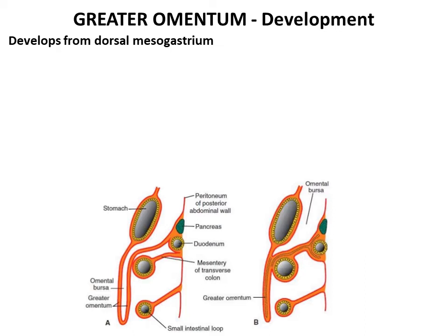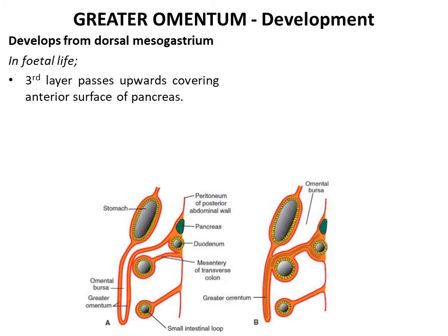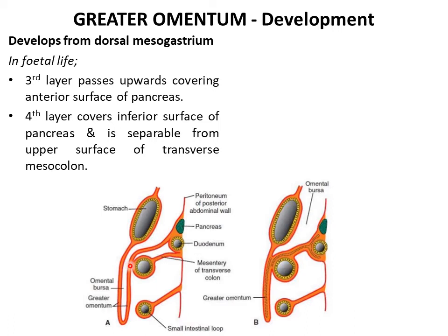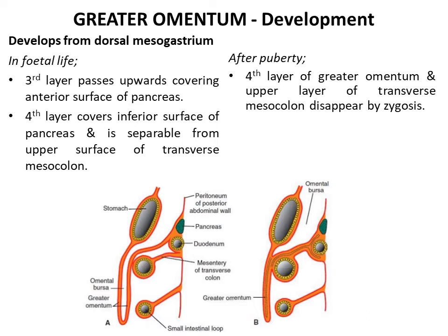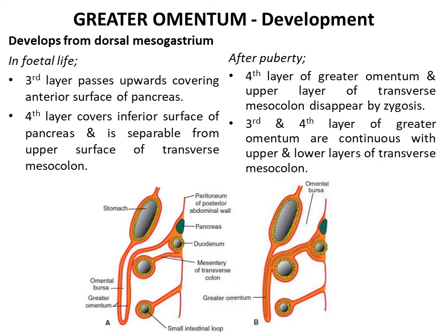The greater omentum develops from the dorsal mesogastrium during fetal life. The third layer of the greater omentum passes upwards covering the anterior surface of the pancreas, whereas the fourth layer covers the inferior surface of the pancreas and is separable from the upper surface of the transverse mesocolon by a small space. However, at puberty the fourth layer of the greater omentum and the upper layer of the transverse mesocolon fuse with each other and disappear by a process known as zygosis. As a result, the third and fourth layers of the greater omentum become continuous with the upper and lower layers of the transverse mesocolon.